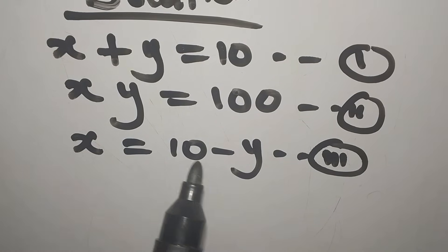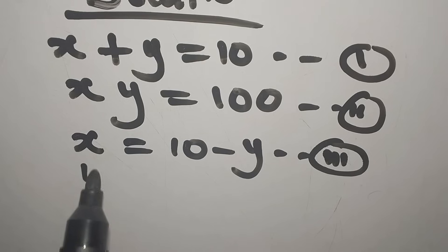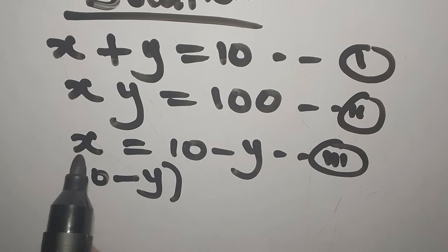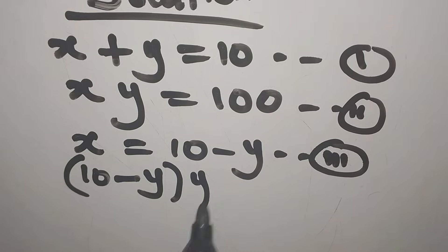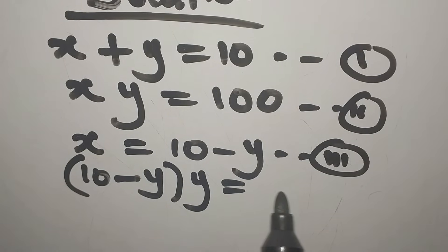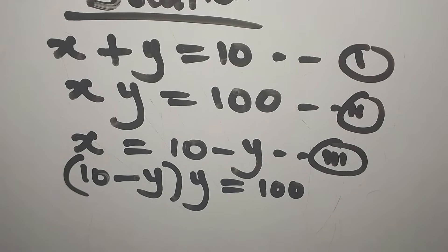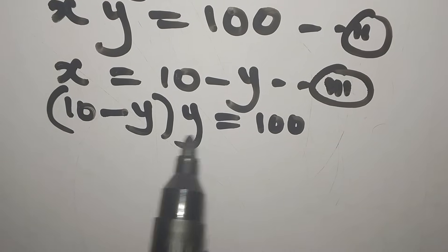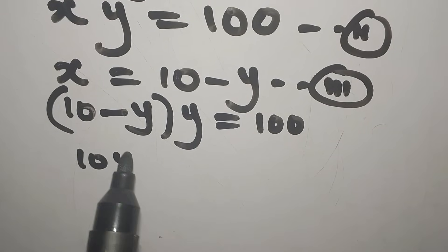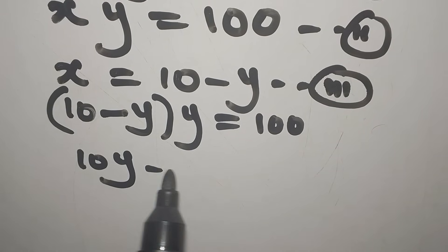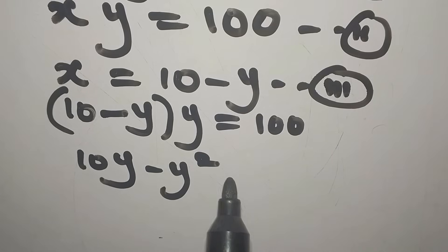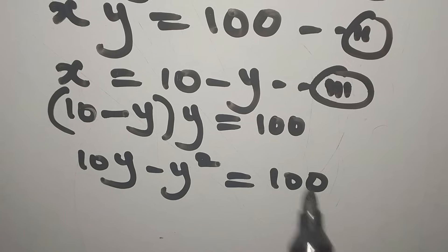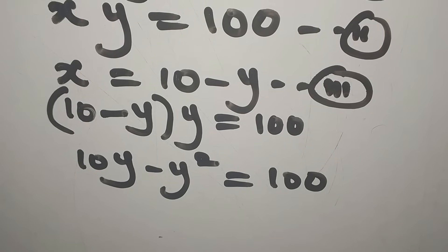The next step is to put Equation 3 into Equation 2. In place of x we write 10 minus y, then that multiplies y, giving us 100. Opening the brackets: y times 10 is 10y, and y times y is y squared, equal to 100.